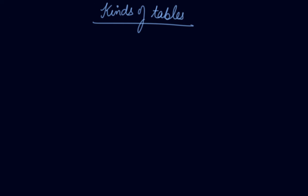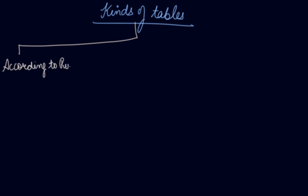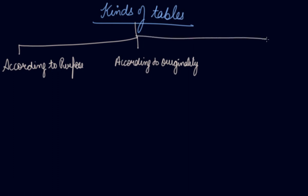In this video, we will be studying about the kinds of tables. We have divided the kinds of tables according to their works and according to how they have been derived. So, according to the purpose, then according to originality, then according to construction.